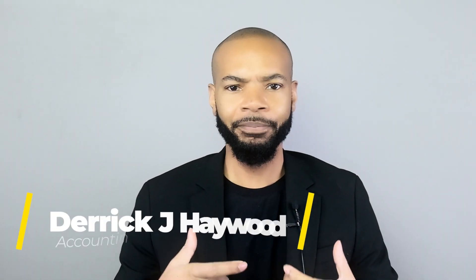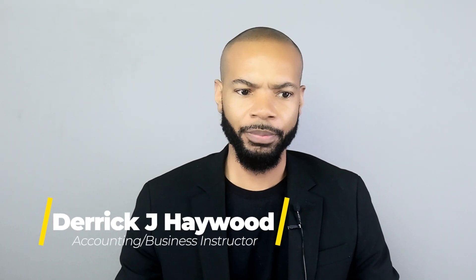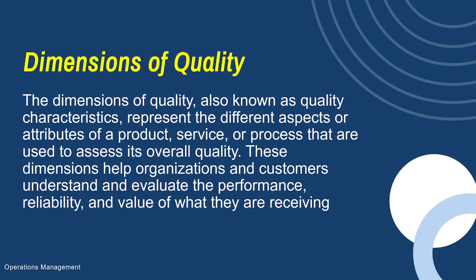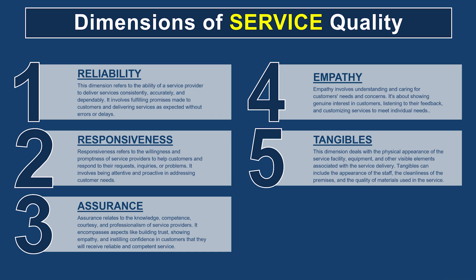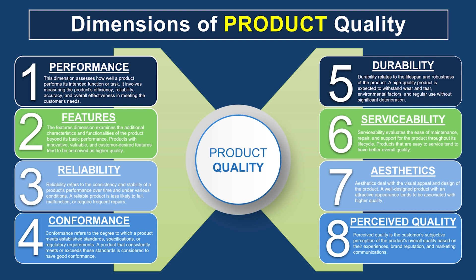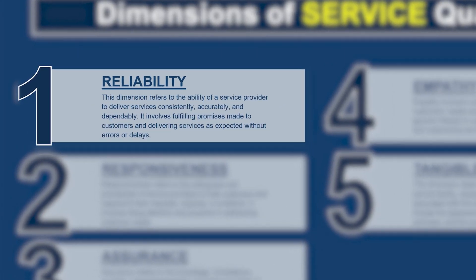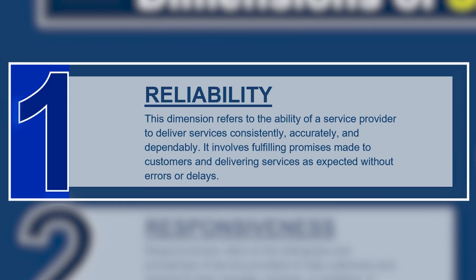Let's talk about some dimensions of quality — what we mean by dimensions of quality are specific aspects of quality when it comes to a service or a product. When we talk about service quality, there are five dimensions often used by customers to judge the quality of a service. When we look at the quality of goods, there are about eight characteristics that customers use to judge whether a product is of high quality.